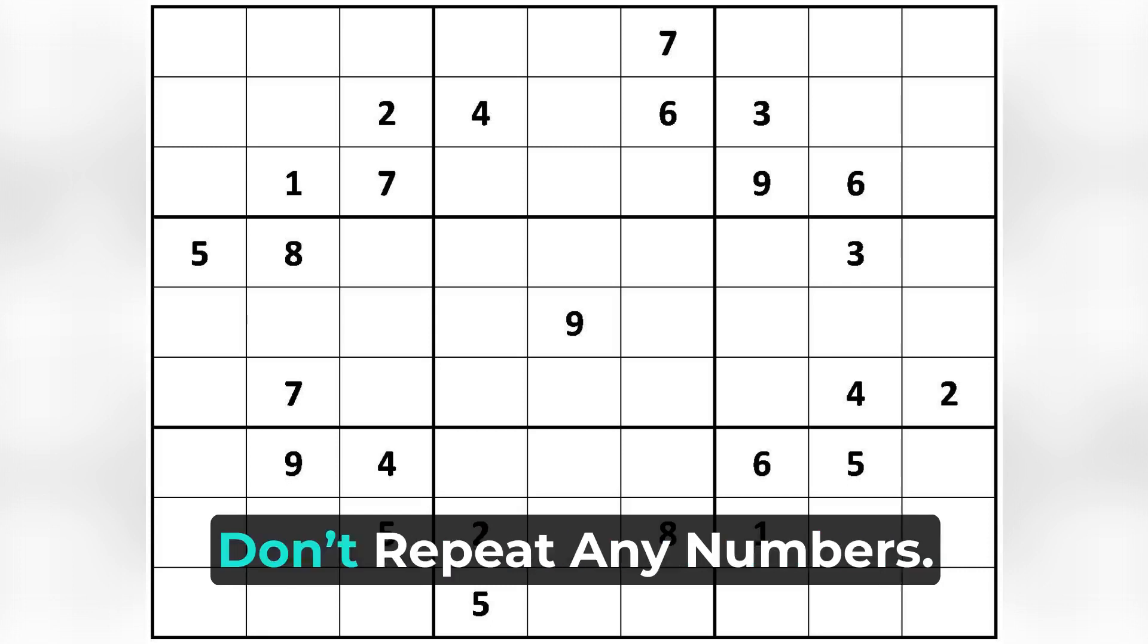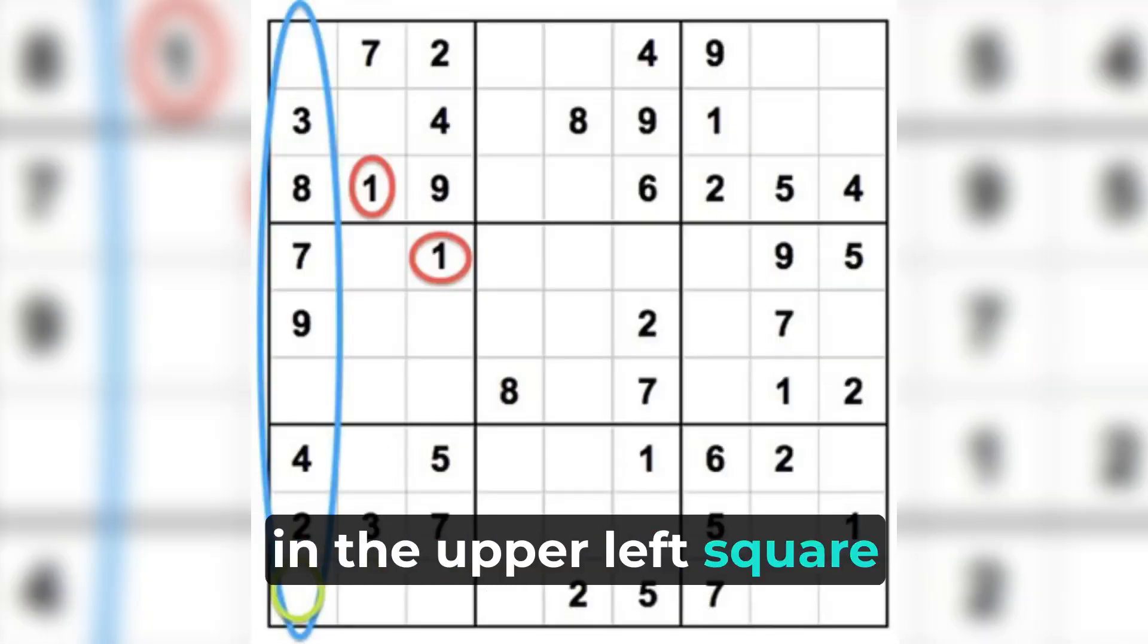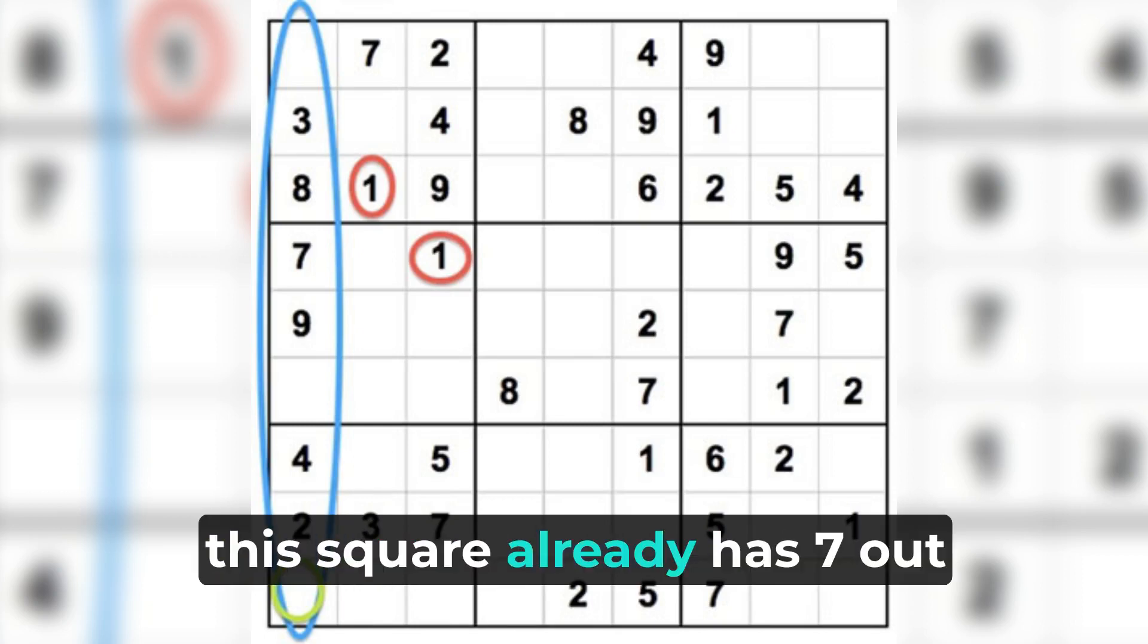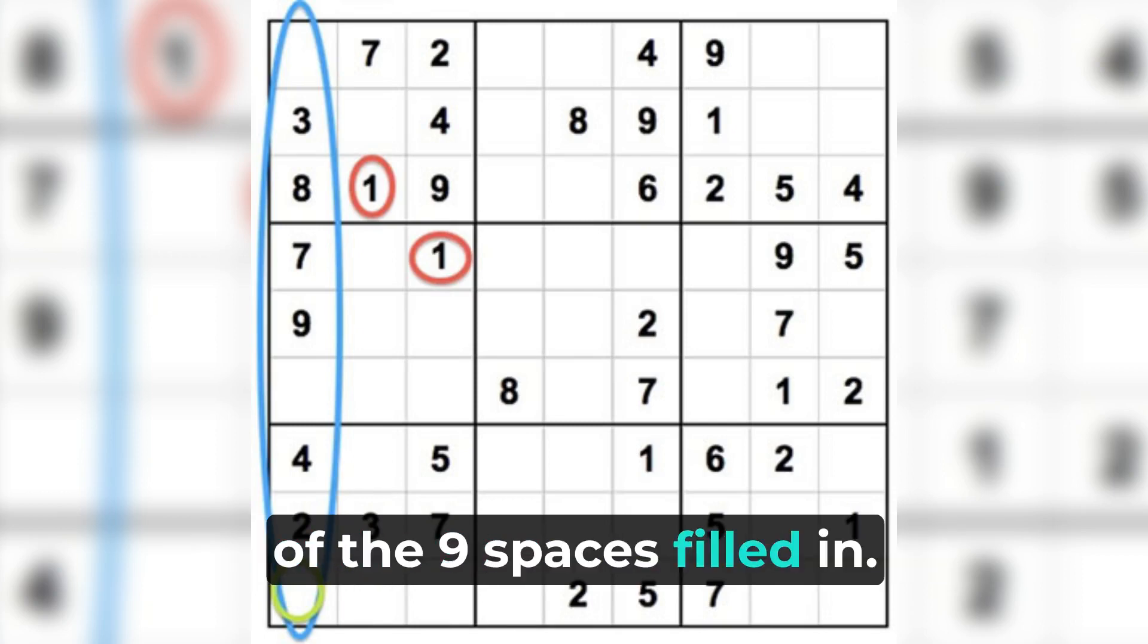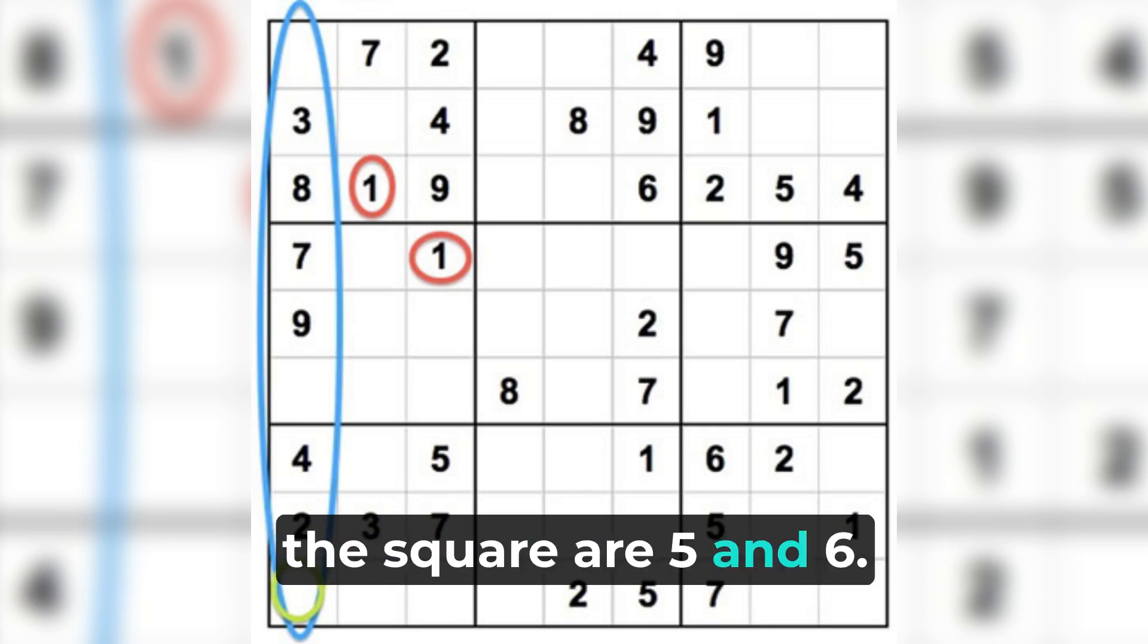Sudoku rule number two: don't repeat any numbers. As you can see, in the upper left square, circled in blue, this square already has seven out of the nine spaces filled in. The only numbers missing from the square are five and six.